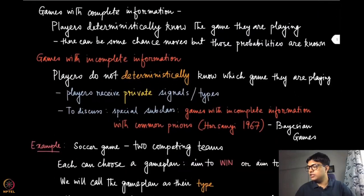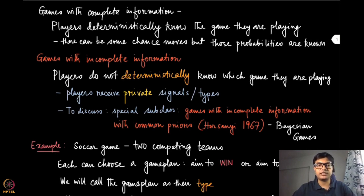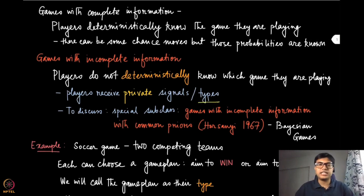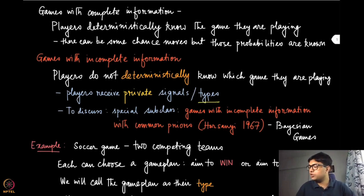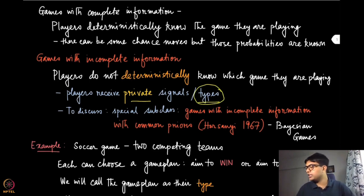In the complete information setting, players deterministically know the game they are playing, but in the incomplete information setting they do not. We will give an example shortly to make this clear. The information that is available to each player is essentially private information, which we are going to call their types. In this discussion we will be focusing on one special subclass of incomplete information games, which are known as Bayesian games.